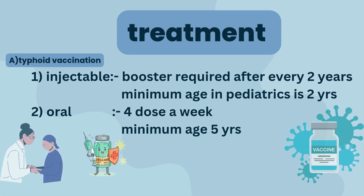Moving on to the last and main topic of this video: treatment of typhoid. First is vaccination, which is given by two routes — injectable and oral. The injectable form consists of inactivated typhoid vaccine, while the oral form consists of live typhoid vaccine. A booster dose is required every two years for the injectable form, while for the oral vaccine four doses a week are given.